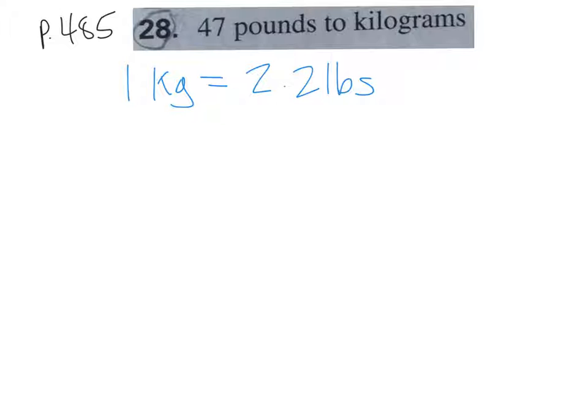Now we're jumping between the metric system and the U.S. system. On page 485, number 28, they want us to convert 47 pounds to kilograms. Pounds are U.S. system units; kilograms are metric system units. You can't just do the nice move-the-decimal thing — we're going to have to do an old-fashioned conversion.